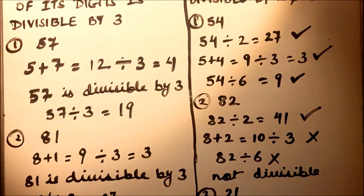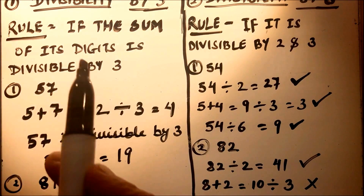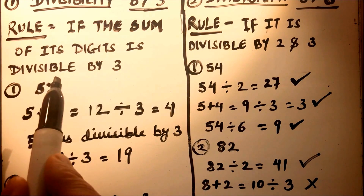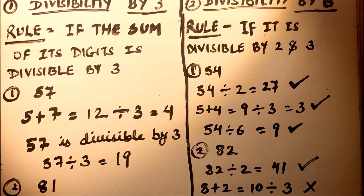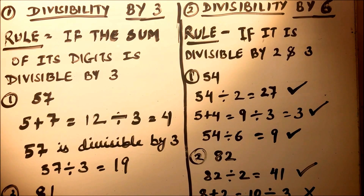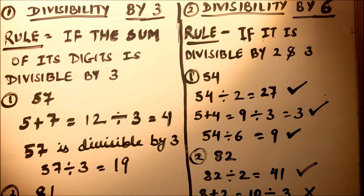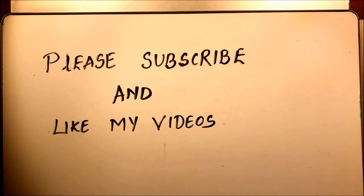So the rule for divisibility by 3 is: if the sum of the digits of the number is divisible by 3, then the number is divisible by 3. The rule for divisibility by 6 is: if the number is divisible by both 2 and 3, then it is divisible by 6, otherwise not. Thanks for watching — please subscribe to my channel and like my videos.